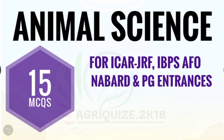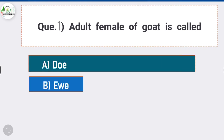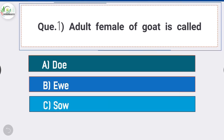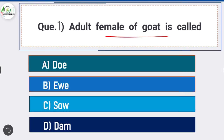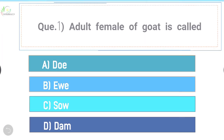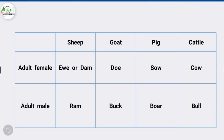Question number one: the adult female of goat is called what? The answer is option A - doe. The adult female of goat is called doe. The adult female of sheep is known as ewe or dam. The adult female of pig is sow, and the adult female of cattle is cow.